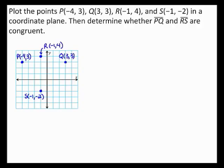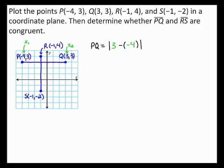Now, to determine whether segment PQ and segment RS are congruent, you need to find the length of each segment. Because segment PQ is a horizontal segment, the length of segment PQ is equal to the absolute value of the difference of the x-coordinates of the endpoints. The x-coordinate of point P is negative 4 and the x-coordinate of point Q is 3. So, the length of segment PQ is equal to the absolute value of 3 minus negative 4. When you simplify, 3 minus negative 4 gives you 7 and the absolute value of 7 is 7. So, the length of segment PQ is 7.